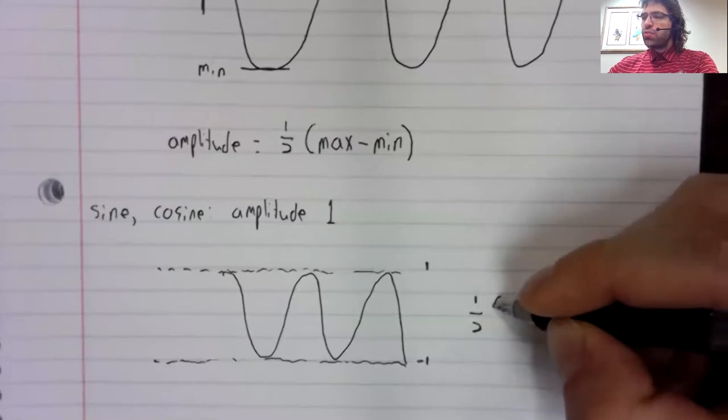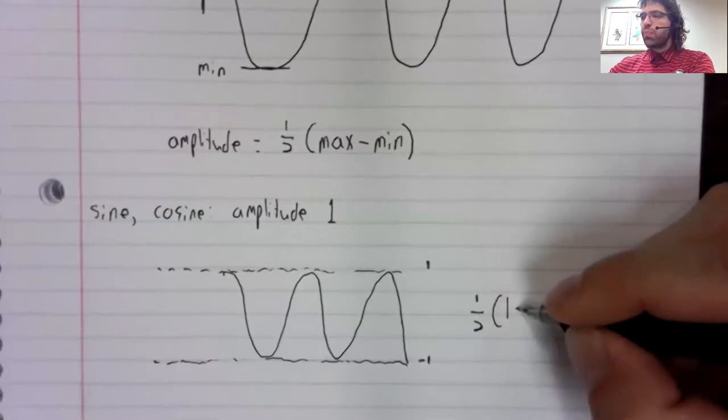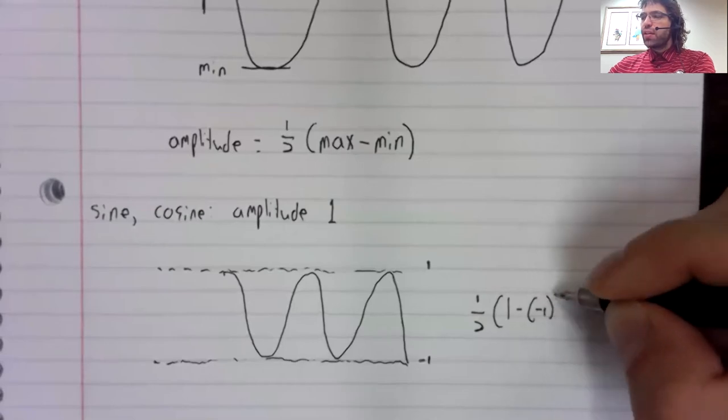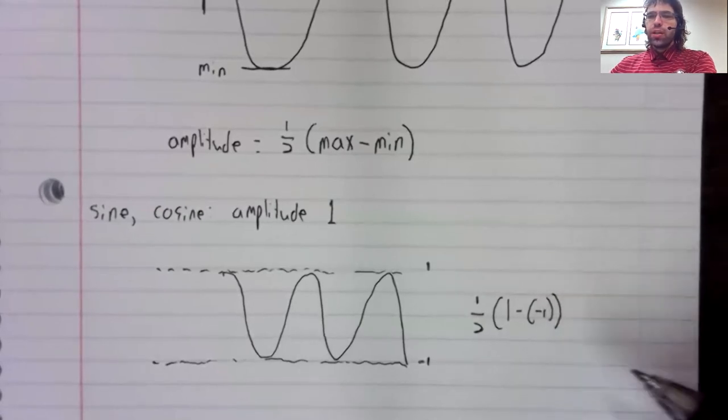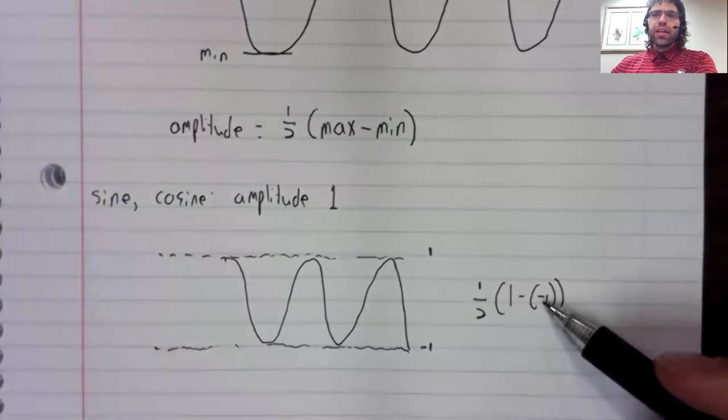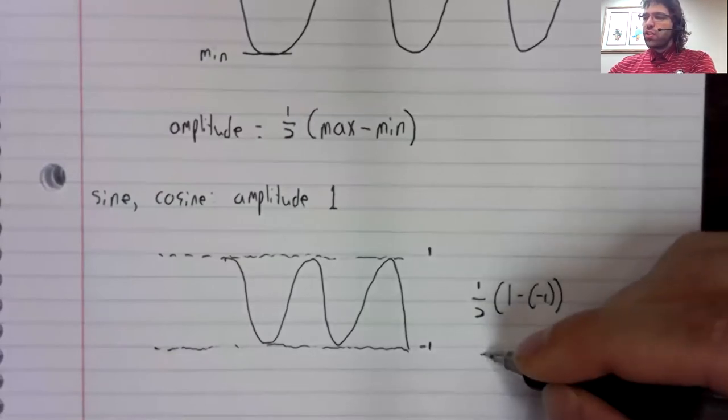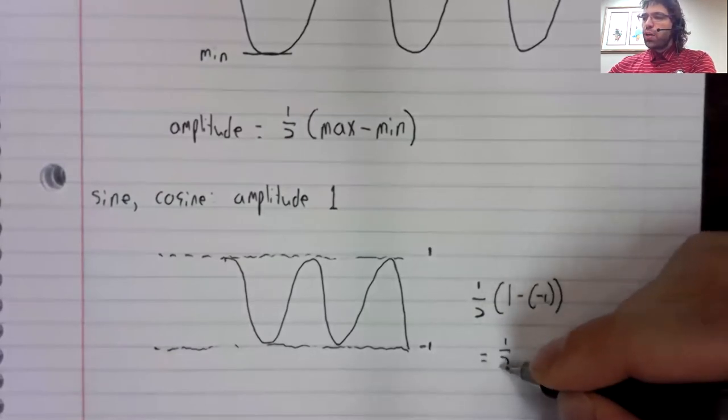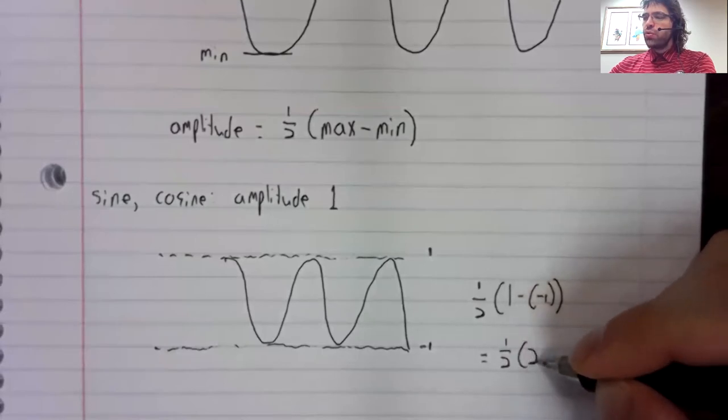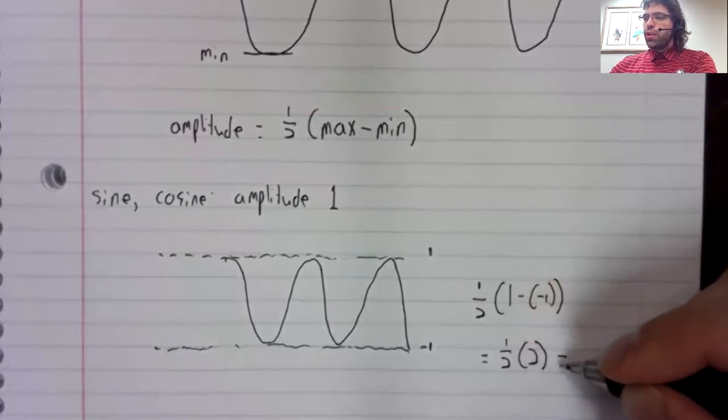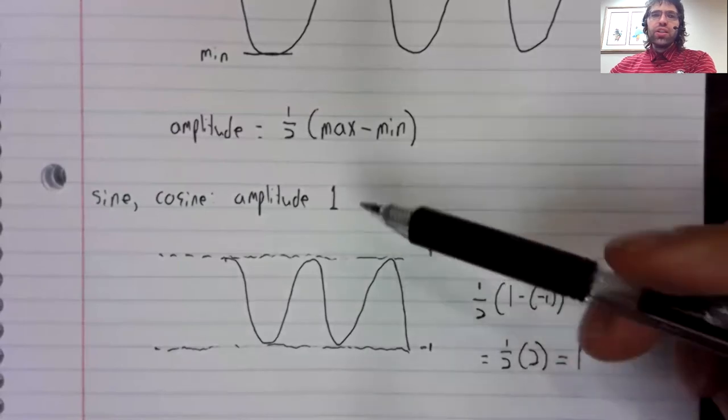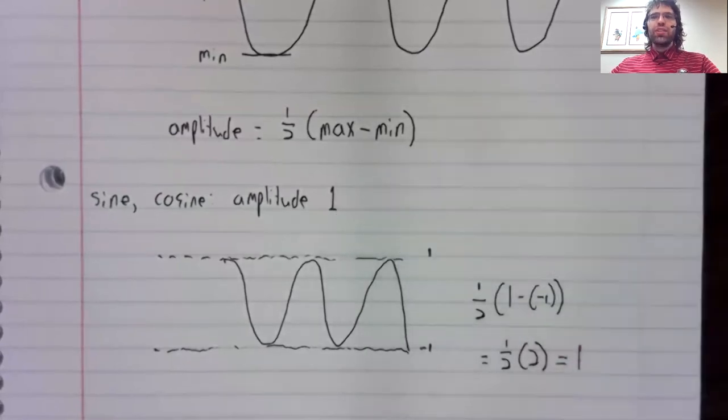The amplitude is one half one minus negative one. Subtracting a negative number is addition. So one half of two, which is indeed one, just as I said it should be.